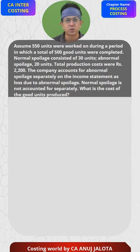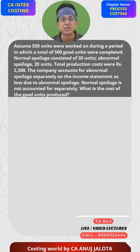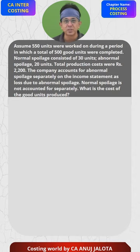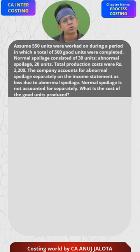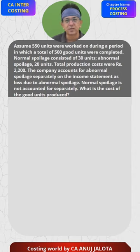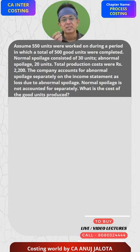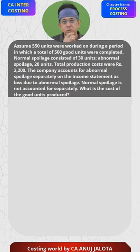So 20 will be abnormal loss. Total production cost is 2200. The company accounts for abnormal loss separately on the income statement as loss due to abnormal spoilage — we also do that. Normal spoilage is not accounted for separately, because normal loss gets absorbed by good units.